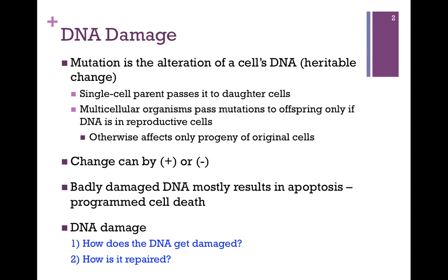Multicellular organisms pass mutations to their offspring only if the DNA is mutated in reproductive cells. Otherwise, it affects only the direct progeny of the original cells. For instance, if the DNA in a kidney cell was mutated, the progeny of that kidney cell will carry that mutation — it's a heritable change. However, a human carrying a mutation only in a kidney cell will not pass that on to offspring. That will only occur if the mutation is in a reproductive cell.